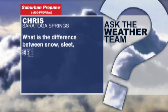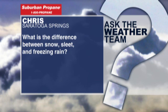Suburban Propane's Ask the Weather Team question of the night — one we have done before and will likely do again as we get deeper into the cold season. Chris from Saratoga Springs wants to know what the difference is between snow, sleet, and freezing rain, and how the various precipitation types tend to come together.